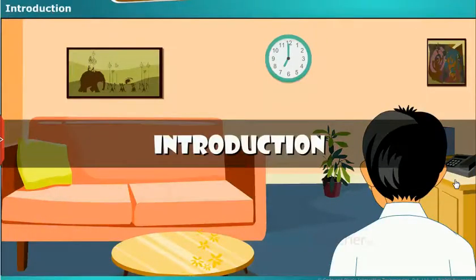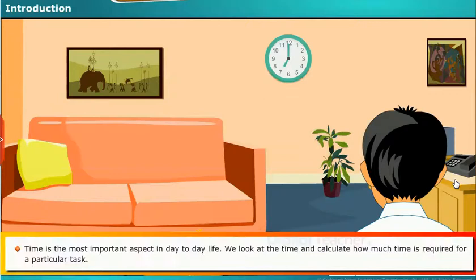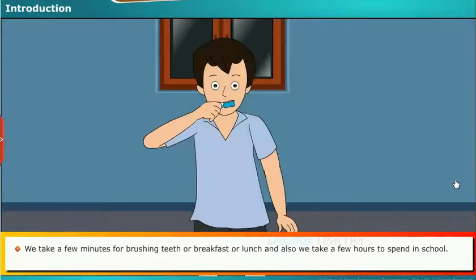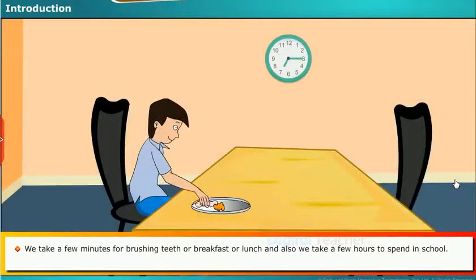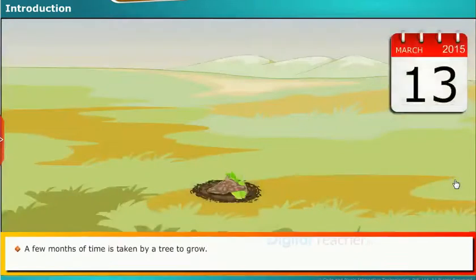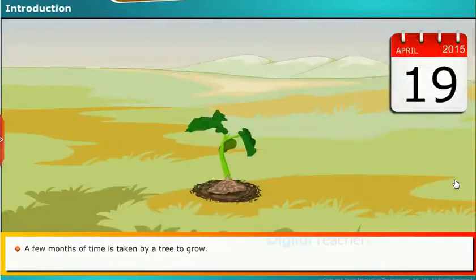Let us see the introduction. Time is the most important aspect in day-to-day life. We look at the time and calculate how much time is required for a particular task. Here are some of the daily activities which require different amounts of time like minutes, hours, days and months. We take a few minutes for brushing teeth, breakfast or lunch, and a few hours to spend in school. A few months of time is taken by a tree to grow.